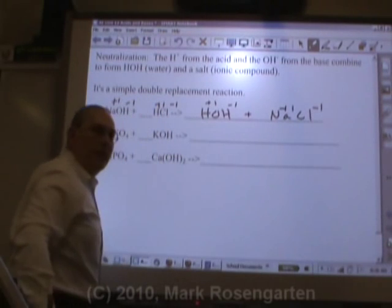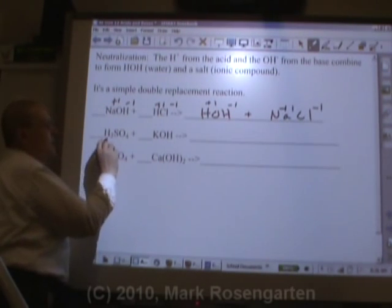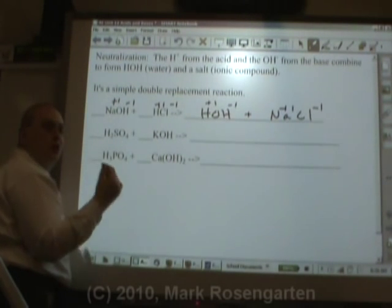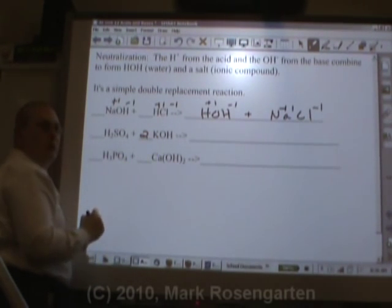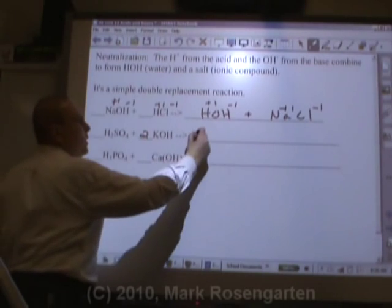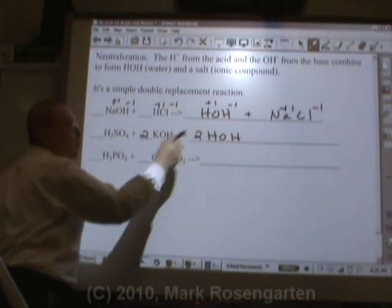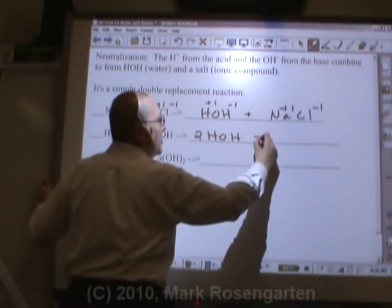And that makes formula writing tremendously easy. This acid has two Hs. That means we're going to need two OHs to neutralize them. This means we're going to make two HOHs. Two Hs, two OHs, two HOHs. Two waters.